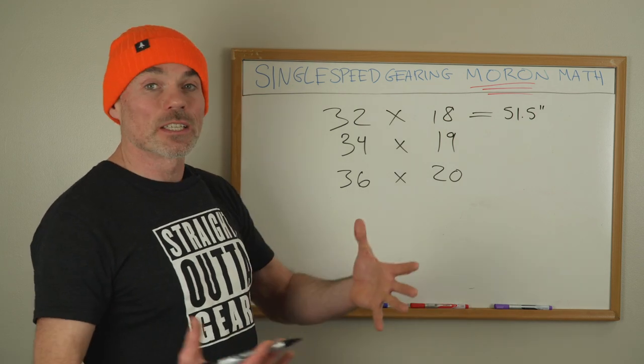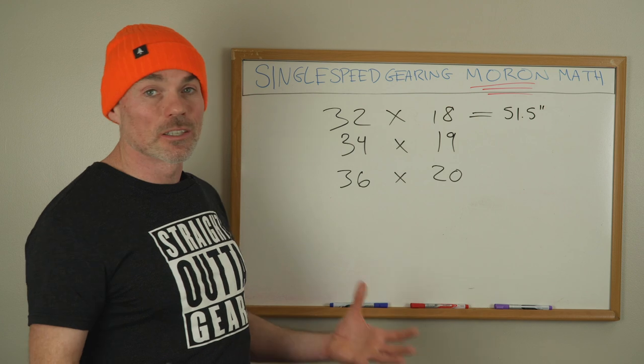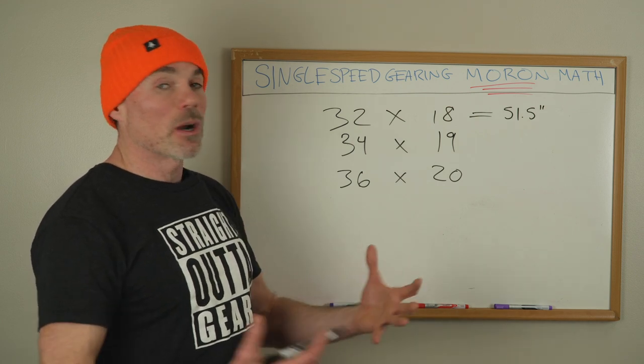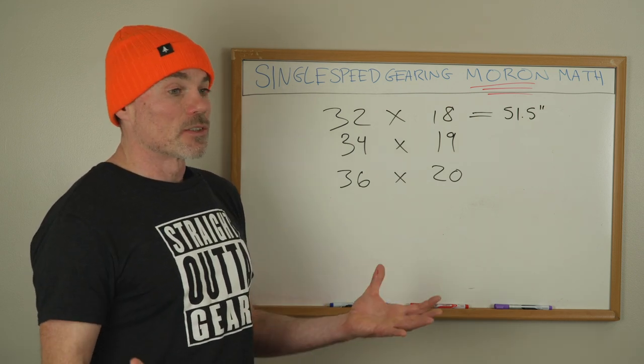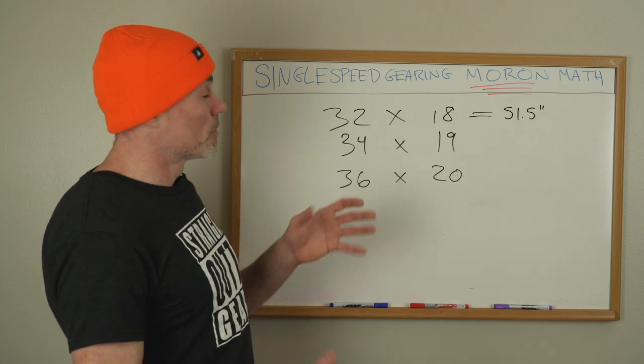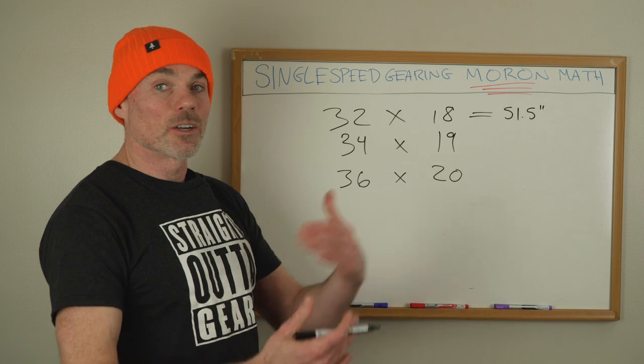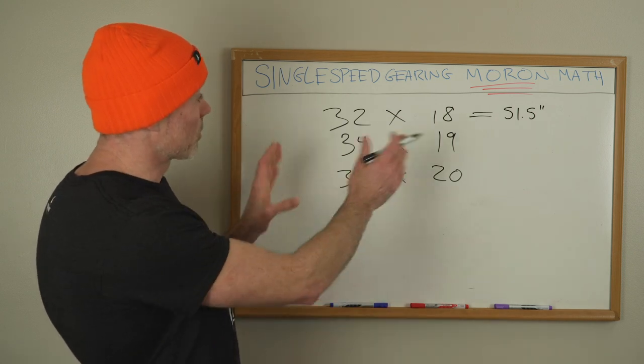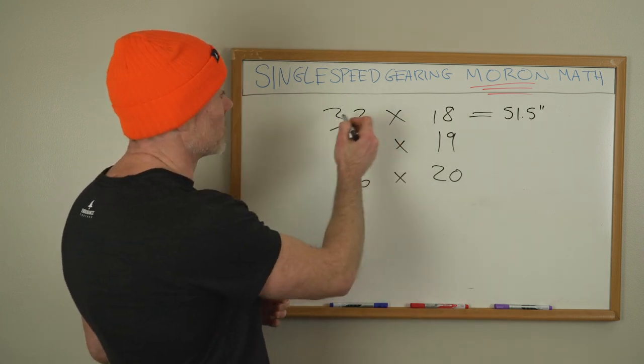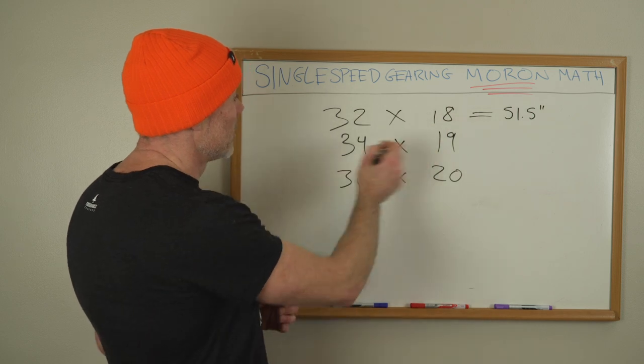Going to a smaller cog is going to make it harder. The main takeaway of this video is going to be that it really is all relative. You know, single speed gearing is a very subjective thing and however you understand it is up to you. So some people kind of go by feel. If you know what these feel like then you know whether to go lower or higher. So when people are throwing these numbers around, we're talking about a 32 chain ring, 18 tooth cog.